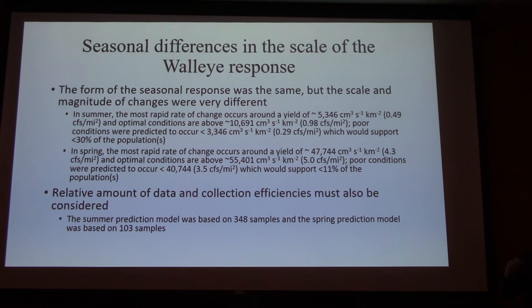Optimal conditions in that case are over five CFS per square mile and poor conditions are down around three and a half or lower. And that would only support about 10 or 11% of the populations.